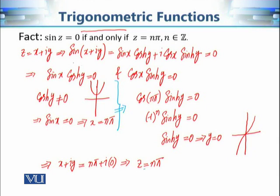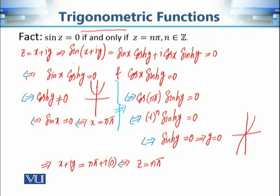For the converse: if z = nπ, then z = nπ + i·0, so y = 0, and every step in the argument is reversible — it is an if-and-only-if statement. Alternatively, we can simply substitute z = nπ directly into sin(z) and verify that it equals zero without going through the entire procedure.